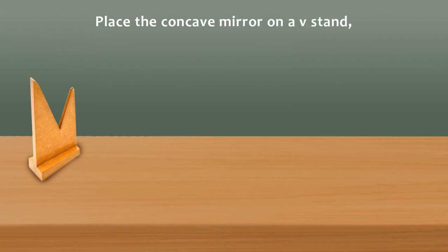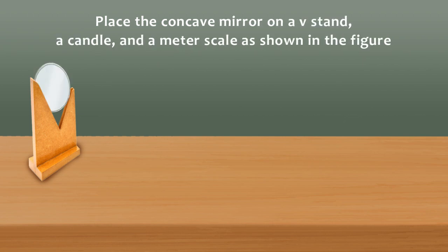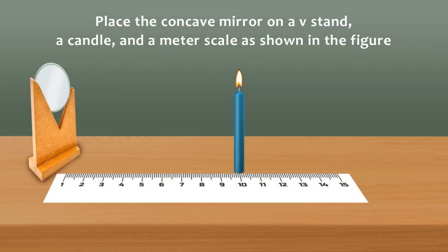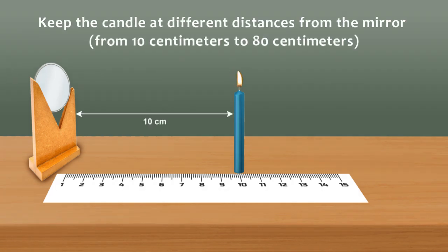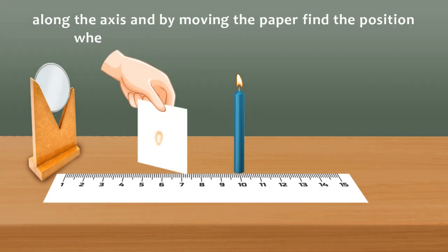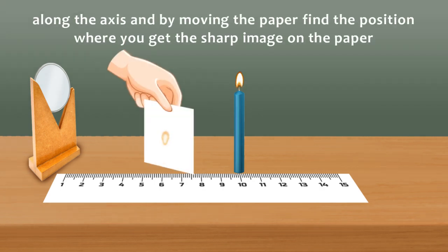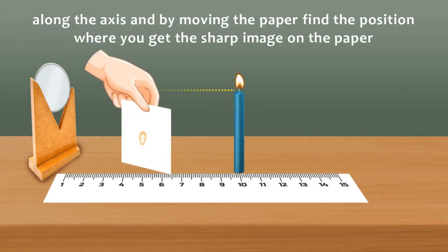Procedure: Place the concave mirror on a V stand, a candle, and a meter scale as shown in the figure. Keep the candle at different distances from the mirror, from 10 centimeters to 80 centimeters, along the axis, and by moving the paper, find the position where you get the sharp image on the paper.